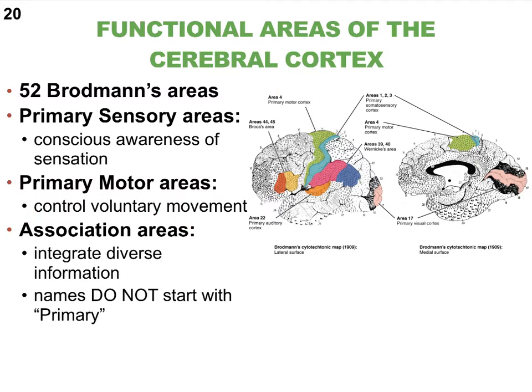The association areas literally associate the input from the sensory areas with the output of the motor areas. When sensory information enters the brain, these association areas interpret, process, edit, and make decisions, ensuring that the right motor areas send commands to the effectors — muscles and glands. Primarily we've focused on skeletal muscles, but don't forget your heart muscle, smooth muscle, and glands.